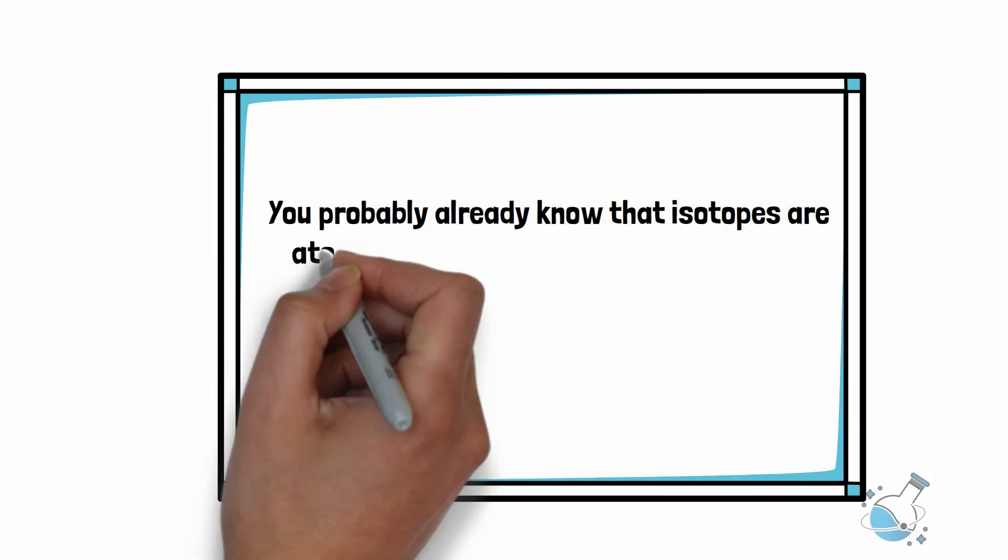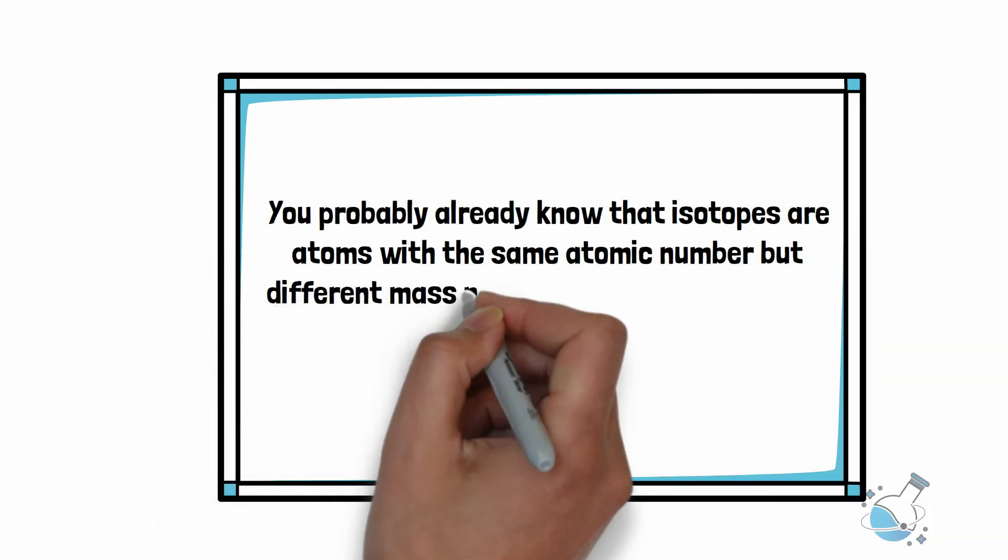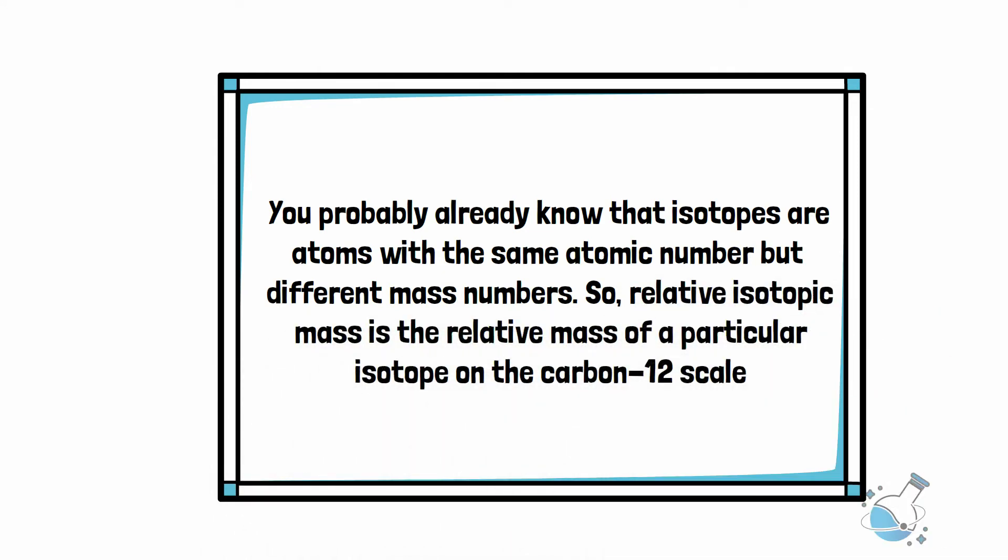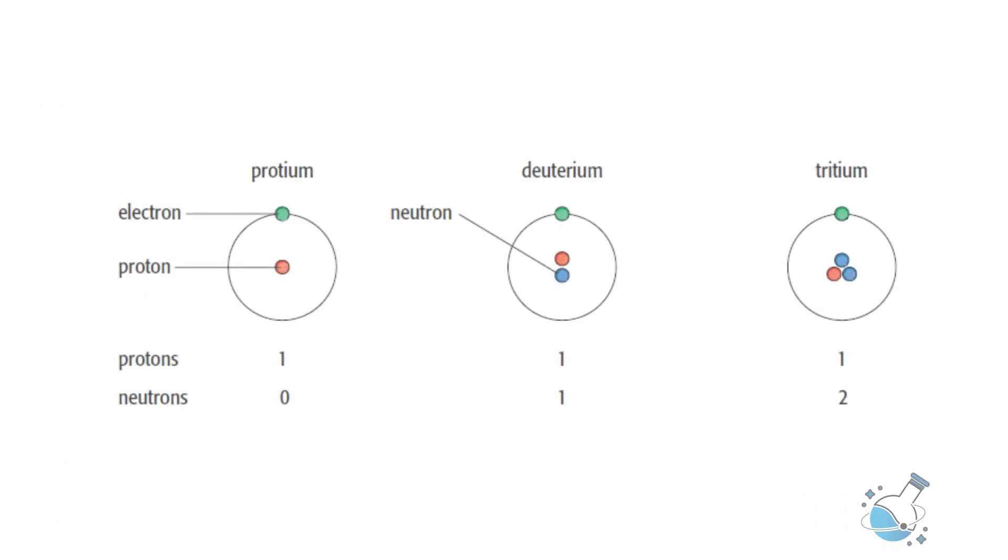You probably already know that isotopes are atoms with the same atomic number but different mass numbers. So, relative isotopic mass is the relative mass of a particular isotope on the carbon-12 scale. For instance, the relative isotopic mass of hydrogen-1, hydrogen-2, and hydrogen-3 is 1, 2, and 3 respectively.